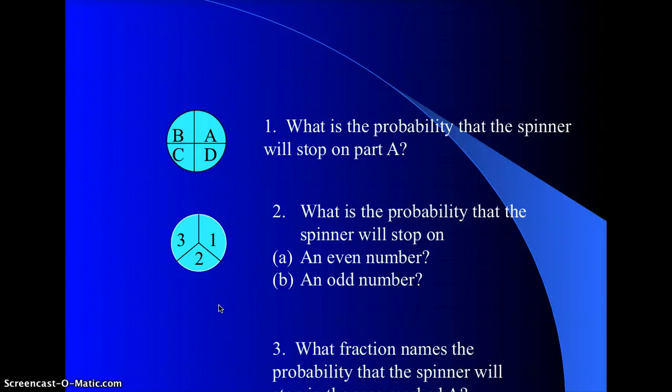So the last one, what fraction names the probability that the spinner will stop on an area marked A again? That one got cut off, sorry about that. It's the same setup as the spinner before. The chance that it'll land on A is one-third.